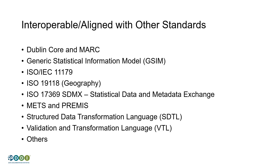An important part of the DDI standards is that they are designed to work with other metadata standards. You may be familiar with the Generic Statistical Information Model from HLG-MOS at UNECE — a conceptual information model we've done a lot of work with. You might know ISO 11179 about metadata repositories, or GIS and geography standards. We work a lot with SDMX. These are important to DDI because when you implement a system, you might manage your micro data primarily with DDI, but you will have to work with other standards for other purposes.